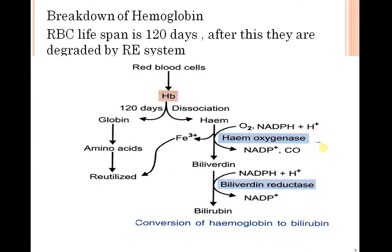How is RBC broken down? The lifespan of RBC is 120 days. After this, they are degraded by the reticuloendothelial system. When hemoglobin is degraded, one step involves heme oxygenase, and biliverdin is formed. Through one oxidation step and one reduction step, it is finally converted to bilirubin.